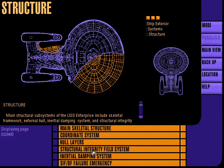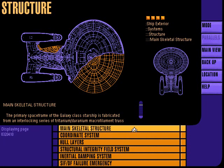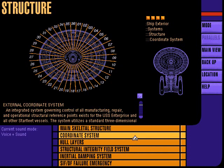The main structural subsystems of the USS Enterprise include skeletal framework, external hull, inertial damping system, and structural integrity field. The main skeletal structure consists of a tritanium-duranium space frame, a secondary framework of terminium trusses, the inner hull structure, and the exterior hull substrate. An integrated coordinate system utilizing standard three-dimensional vertex and vector measuring schemes governs manufacturing, repair, and operational structural reference points aboard all Starfleet vessels.